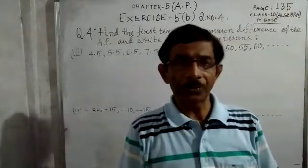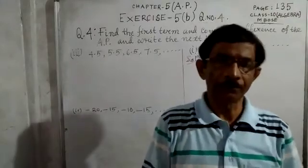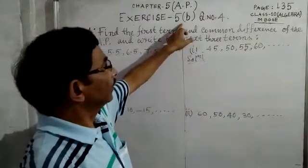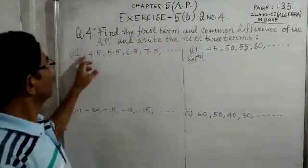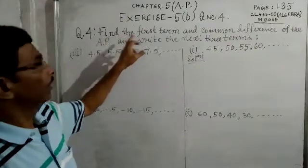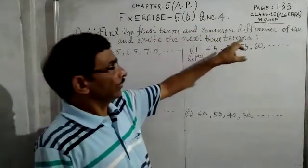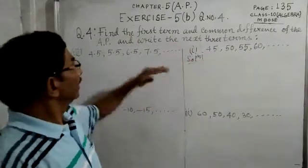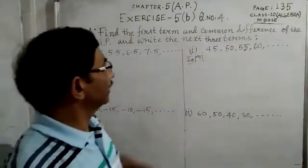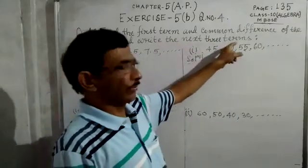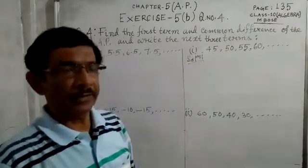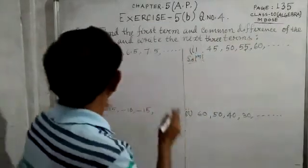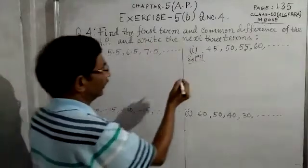Now we shall learn question number four from arithmetic progression, exercise 5B, question number four. Find the first term A and common difference D of the AP and write the next three terms. In the previous question we learned to write the next two terms, so in this question we write the next three terms using the same procedure.